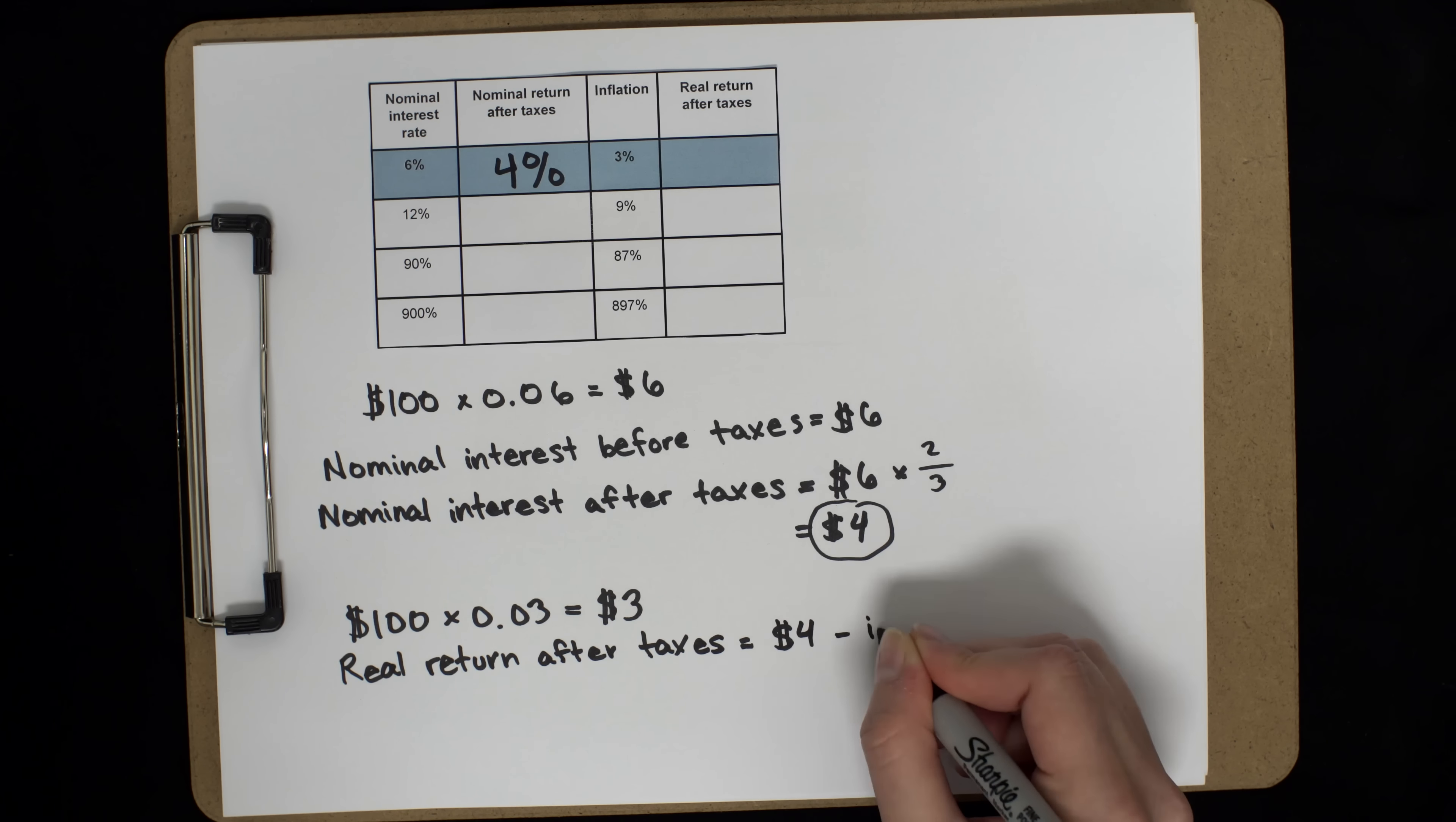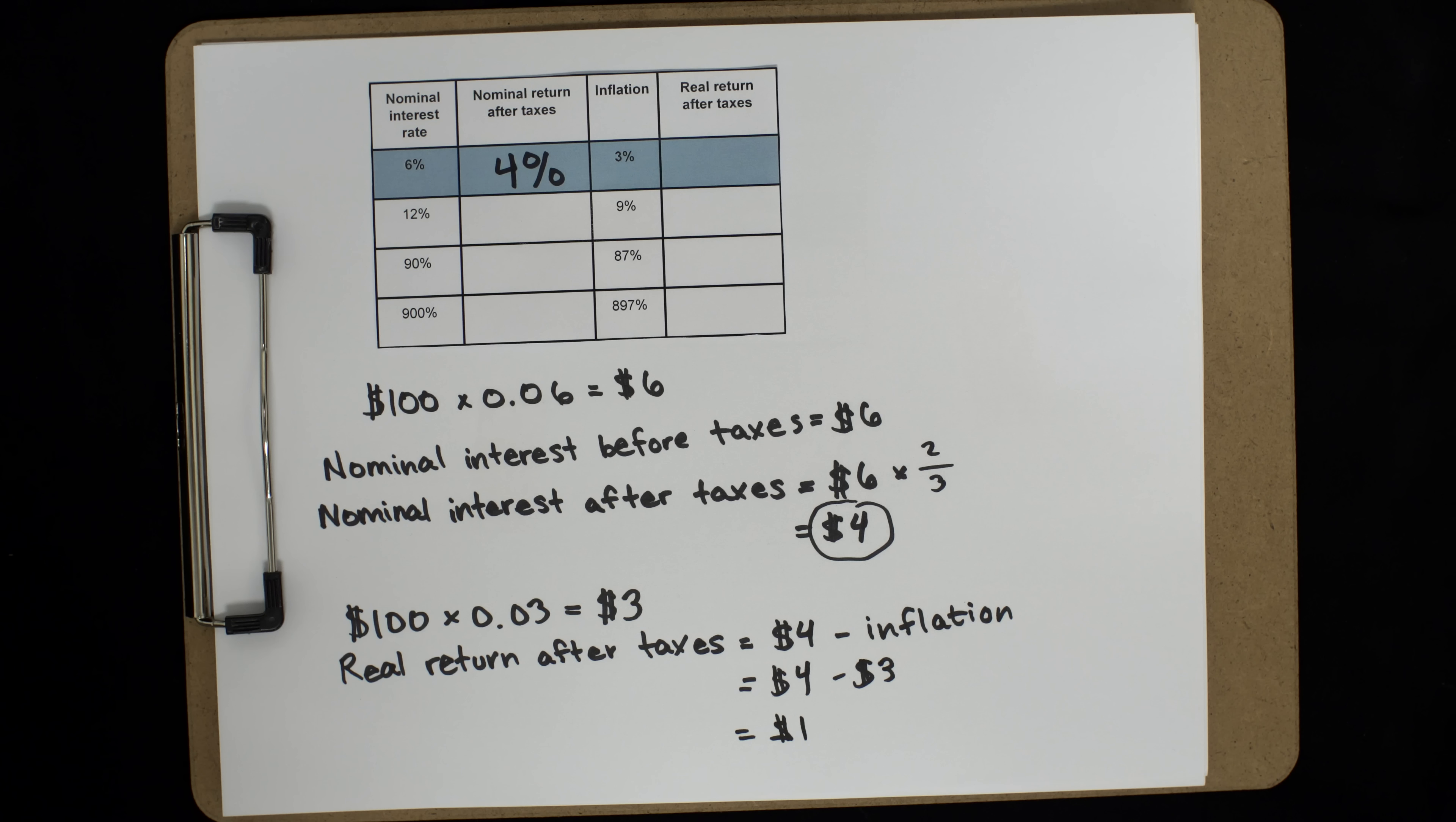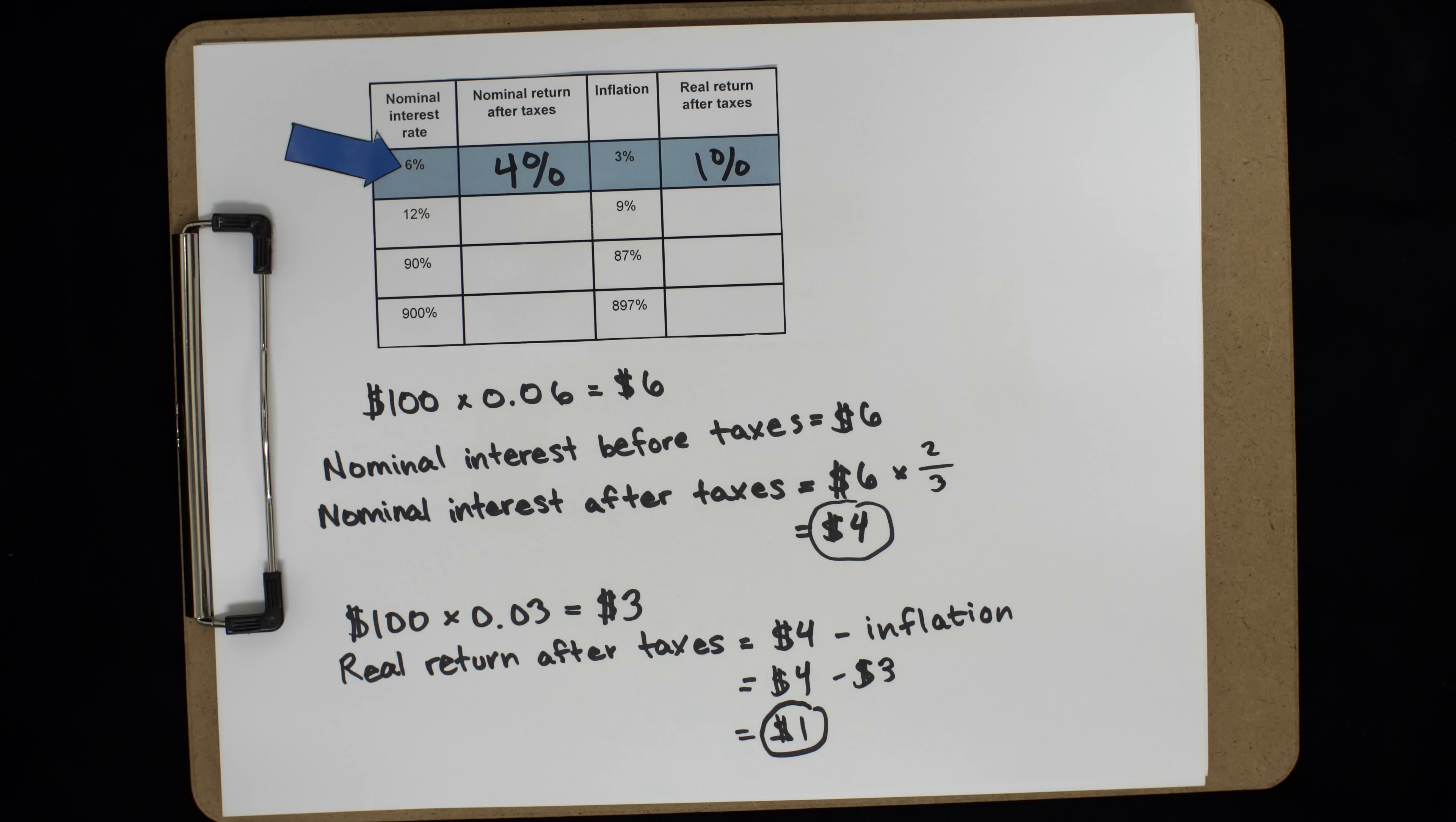but three of those dollars are just making you break even given inflation. So your real gain after taxes is just $1. Given that you saved $100, we could also view this as a real return of 1% after taxes. Just to recap, before taxes and inflation, you earned 6%. But after taxes and inflation, your real gain was 1%. It's a lot lower, but it is still positive.